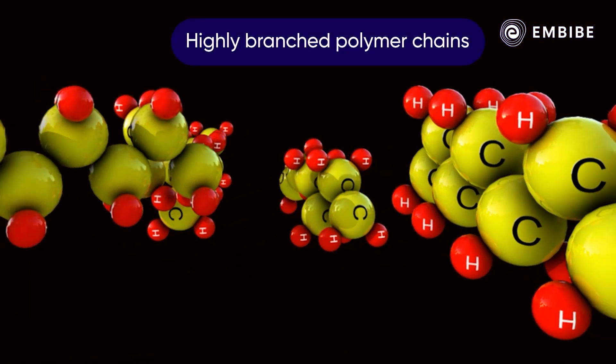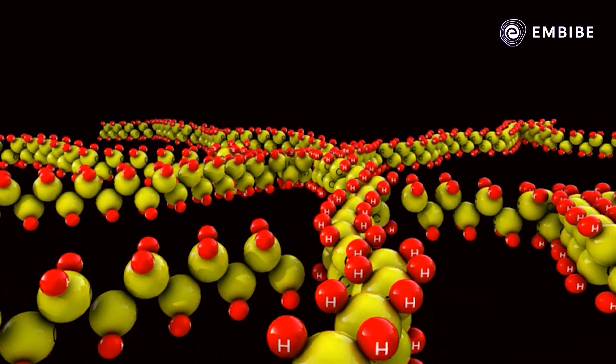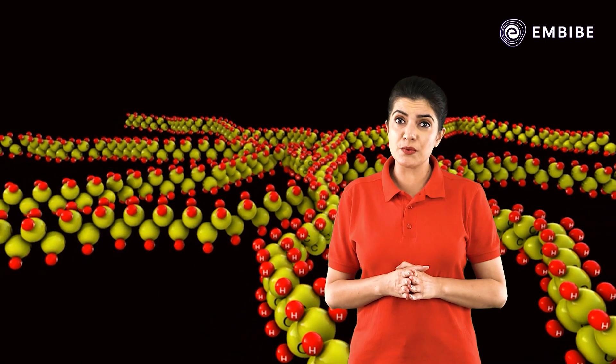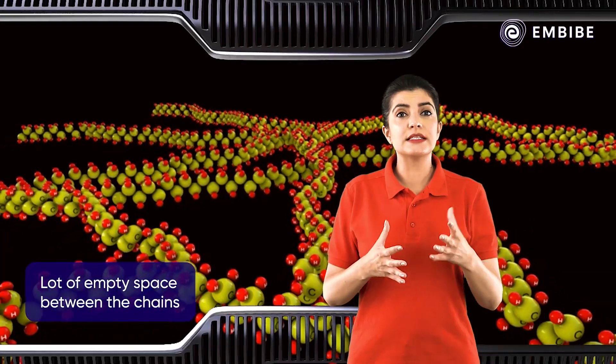These conditions result in highly branched polymer chains. Branches prevent the chains from getting packed closely. Consequently, there is a lot of empty space between the chains as compared to HDPE chains, which are tightly packed. This makes LDPE more flexible and weaker than HDPE.